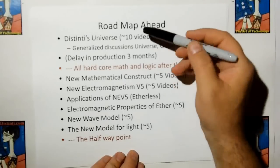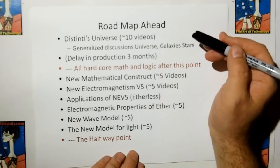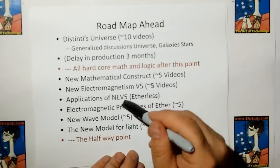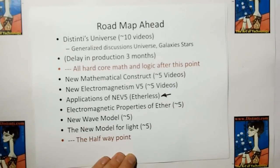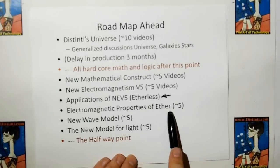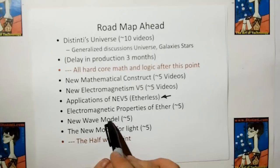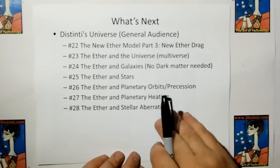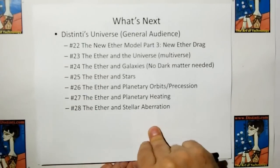The roadmap ahead: we're going to cover Distinti's universe in the next ten videos. After that, there's going to be a three-month delay in production because I have to move and reset up my studio, and I also have to produce a paper on the new math construct. Then we're going to do the new math construct, new electromagnetism V5, an etherless application for electrical engineers, the electromagnetic properties of the ether, and the new wave model. We'll then combine that with the new wave model to produce a new model for light. This is only the halfway point of ethereal mechanics — producing these videos helped me find the points I was stuck on.